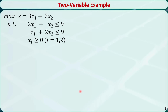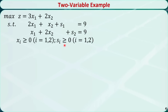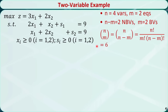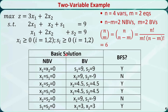Let's check the concept of basic feasible solution using this linear programming problem with two variables. First, we need to introduce two slack variables to make the constraints equations. Now the problem is in the standard form. We have n equal to 4 variables: x1, x2, s1, and s2; and m equal to 2 equations. So we need to pick n-m equal to 2 non-basic variables and set them to 0, and solve for the remaining m equal to 2 basic variables. n choose m, or n choose n-m, is equal to 6, giving us 6 possible combinations to choose non-basic variables, listed in the left column.